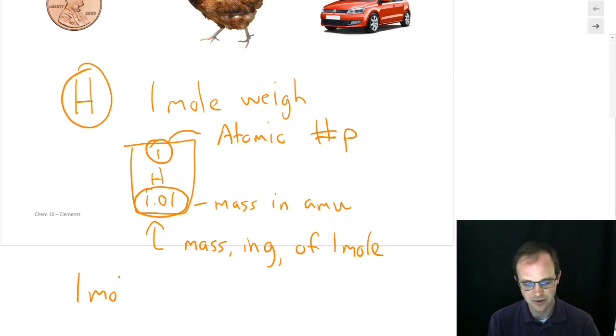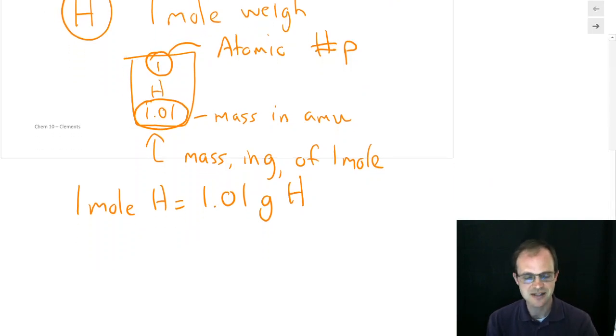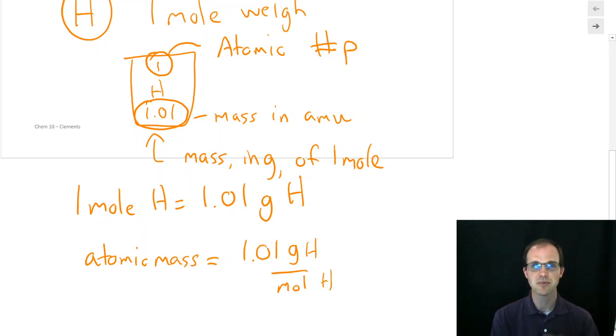So we have that one mole of hydrogen is 1.01 grams of hydrogen that we get directly from the periodic table. Most often people write it as the fractional unit, and they say that the atomic mass, and some people will still use atomic weight, is 1.01 grams per mole for hydrogen. We could even be more specific and say it's grams of hydrogen per mole of hydrogen. But that's most often what we see is 1.01 grams per mole.